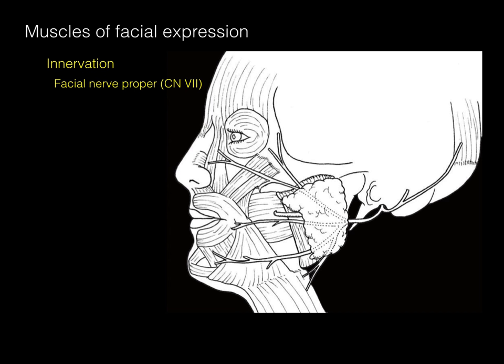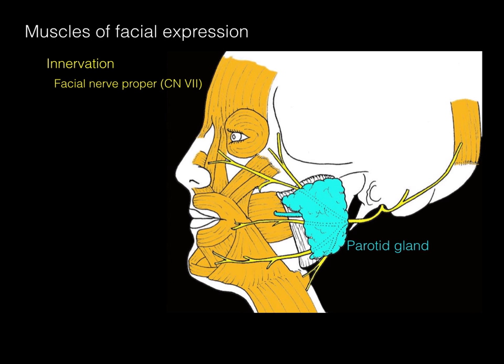Here we've got in yellow those branches of the facial nerve proper, and there's the parotid gland. The facial nerve — those five branches — go right through that parotid gland, and then course out to innervate those muscles of facial expression.